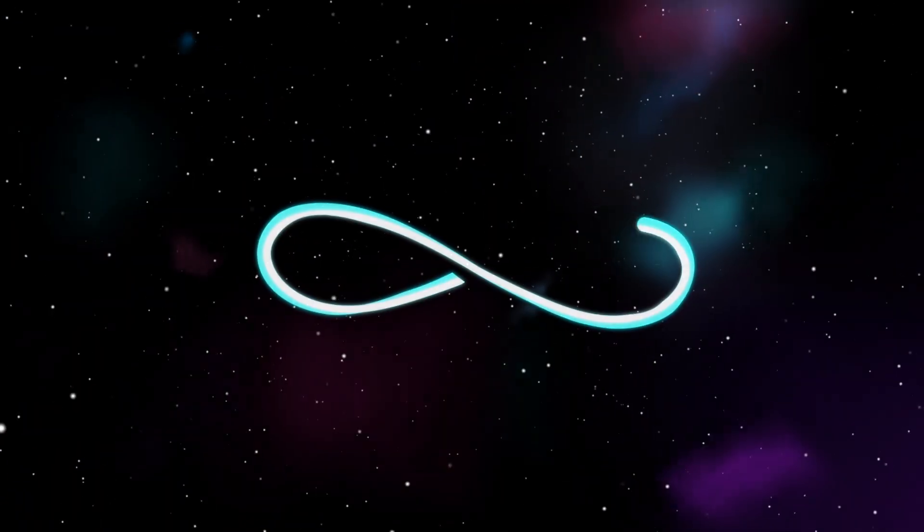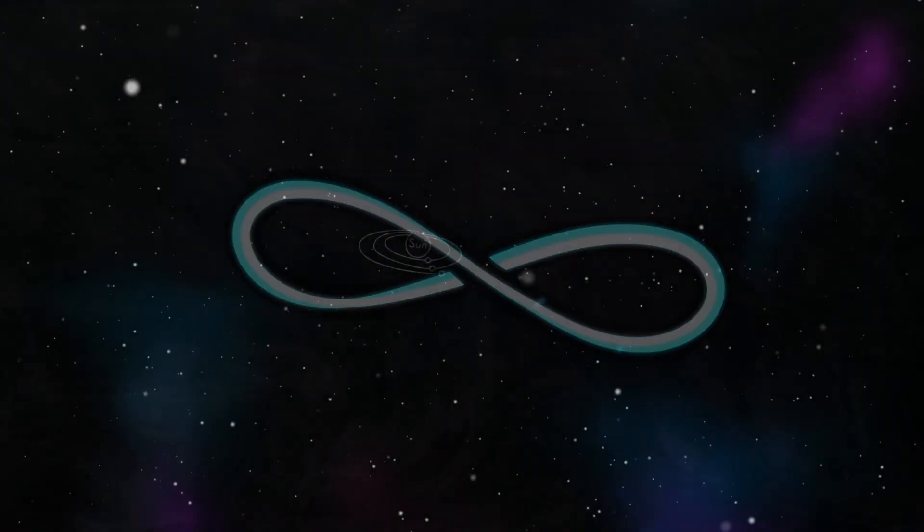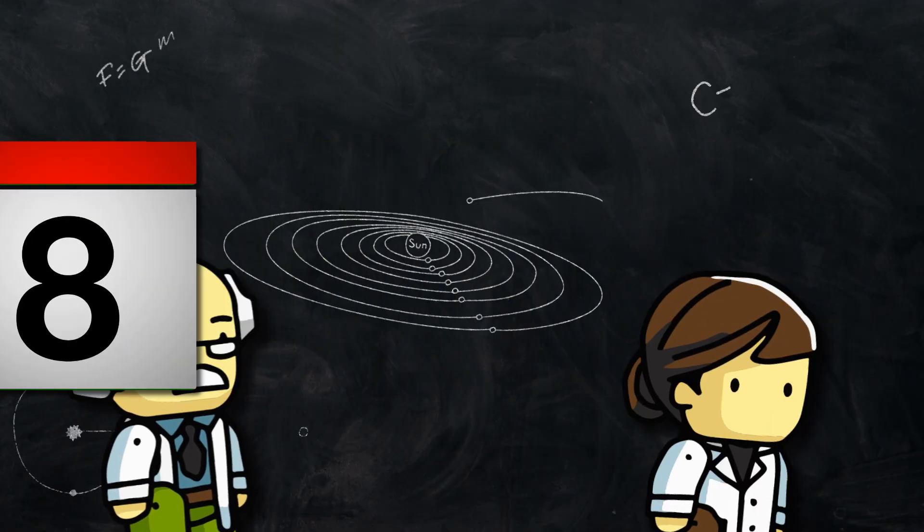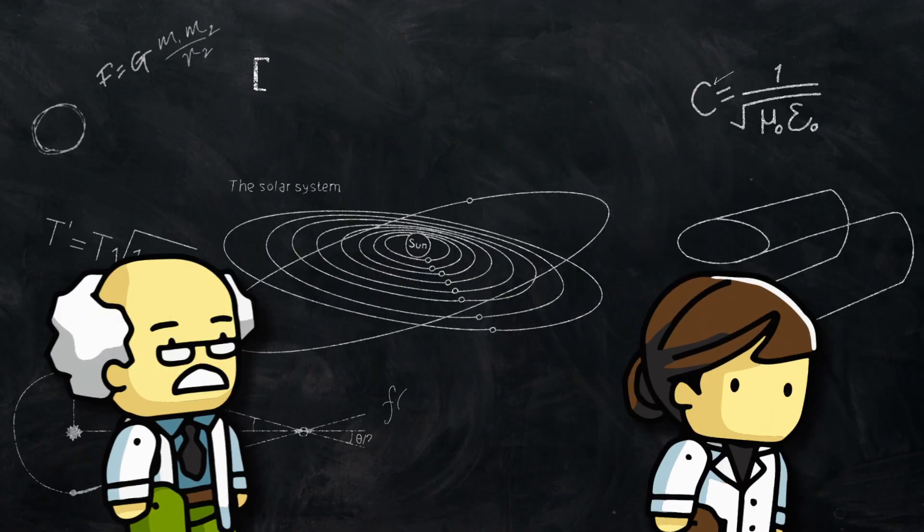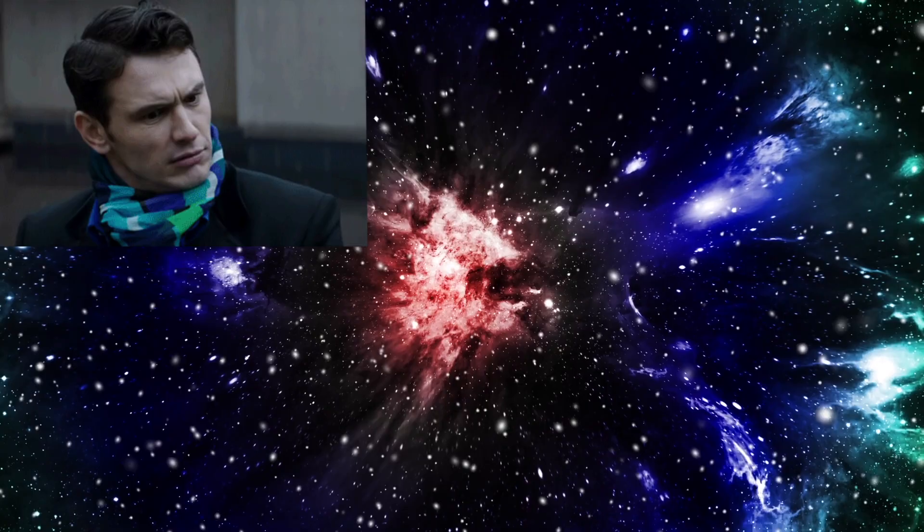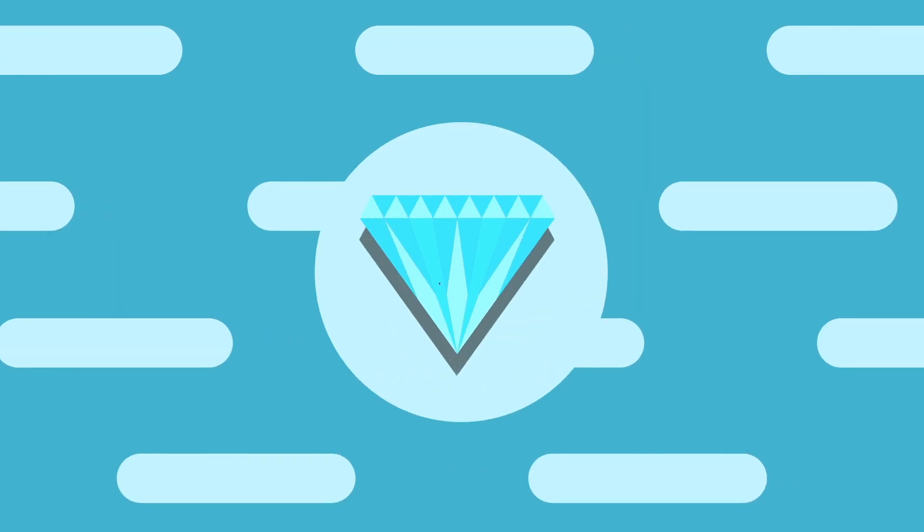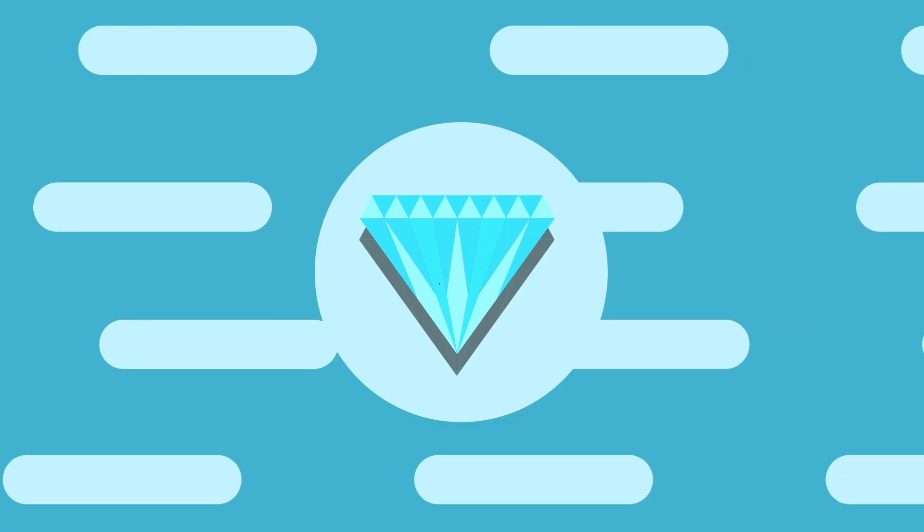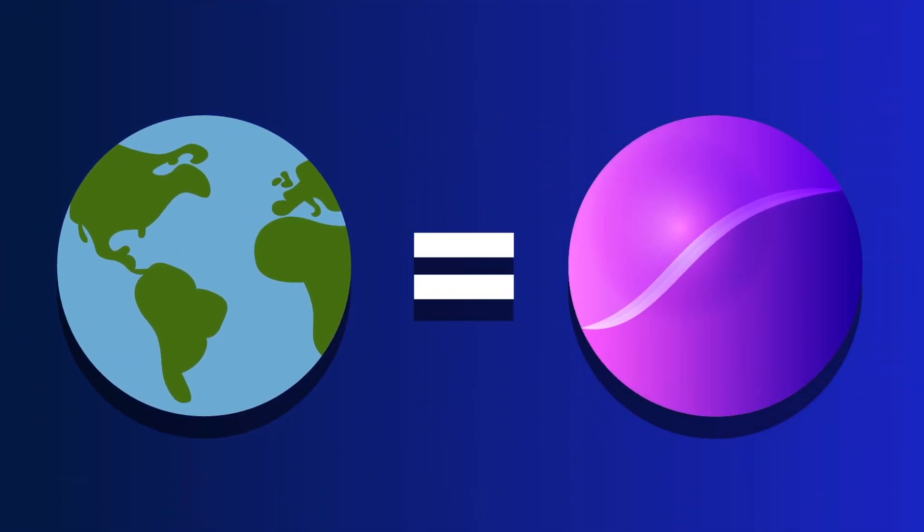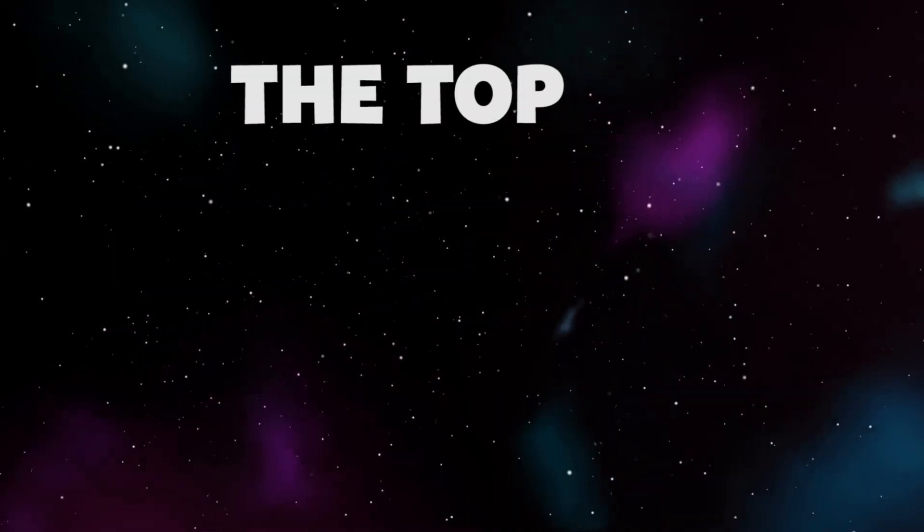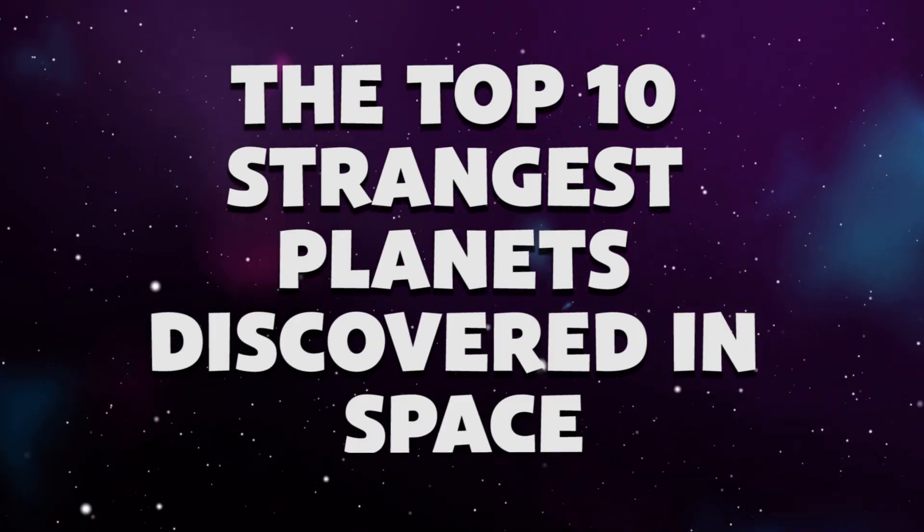The universe is a vast and seemingly infinite place. With each passing day, scientists and astronomers discover new celestial objects and planets that greatly astound us with their unique and unusual characteristics. From planets made entirely of diamonds to planets with a similar makeup of our own planet Earth, here are the top 10 strangest planets discovered in space.